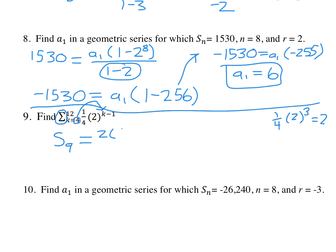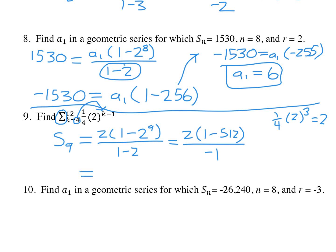The formula is a1 times 1 minus r to the 9th over 1 minus 2. R is whoever has the variable exponent above it, so r is 2. This equals a1 of 2. We just found that 2 to the 8th is 256, so 2 to the 9th is 512. Our answer: I can turn the denominator into negative 2. Negative 2 times negative 511 gives us 1,022.